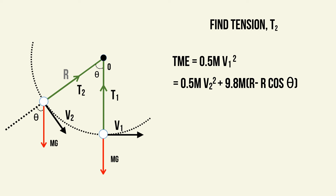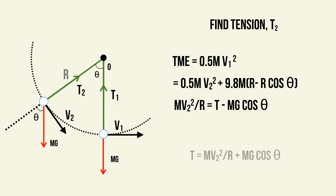The height h equals r minus r cos θ. Therefore, mgh at the position where the object travels at velocity V2 equals 9.8m(r − r cos θ). From this we can find V2. Since mv₂²/r equals T minus mg cos θ, we find that T equals mv₂²/r plus mg cos θ. That is how you use total mechanical energy and resolving radially to find tension. You may also be asked to find tangential velocity or angles, and must become expert at resolving radially.